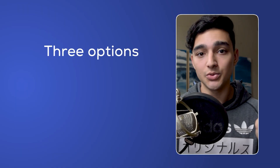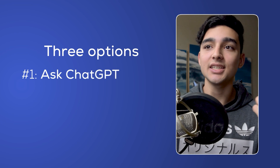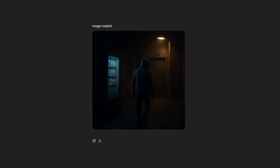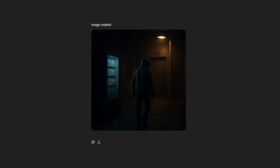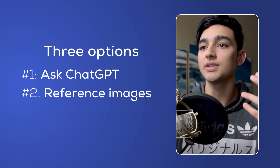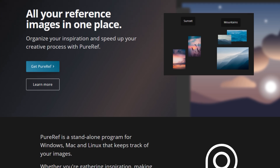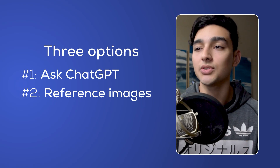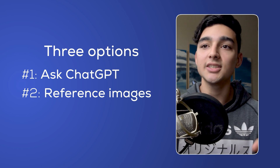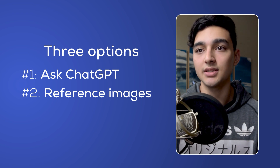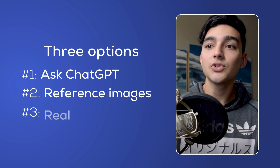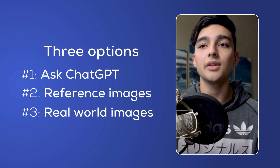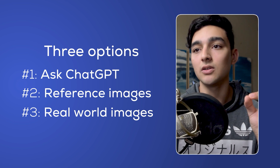Well, you have three options. Option one: you can ask ChatGPT to generate you an image — it won't be perfect but it will give you a starting point. Option two: look for reference images and make a mood board with a software called PureRef — you can find images on Pinterest or Google Images. And option three: if your scene is based on a real location, make a mood board on PureRef with images from that specific location.